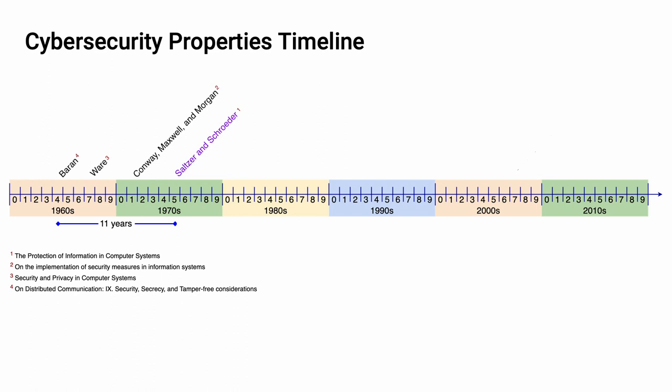Throughout this period, there's a conversation going on as to what these properties mean and what they're for. By the time we get to 1975, we've more or less settled on these three properties. In 1983, when the Department of Defense released the Trusted Computer Systems Evaluation Criteria, known as the Orange Book, they didn't think it significant to put a reference to the CIA model. And it's not until 2002 that the definitions for CIA show up in the United States Federal Register.